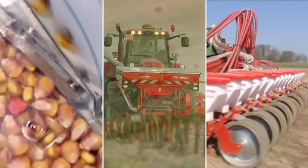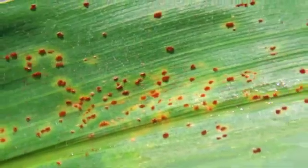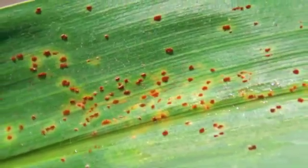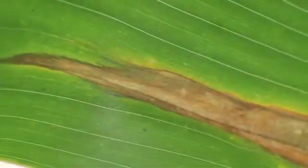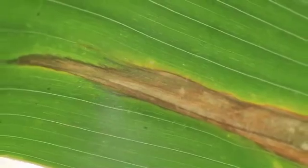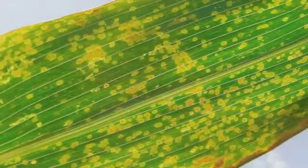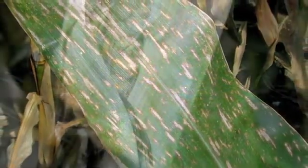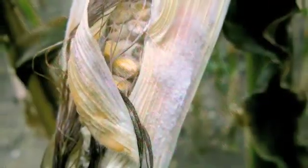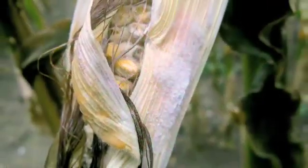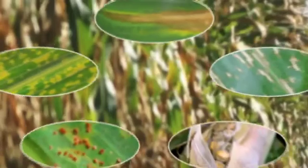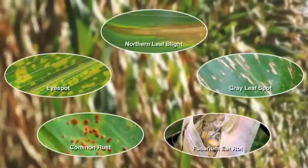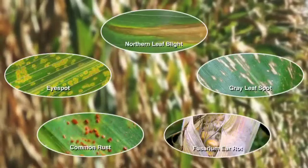These factors, among several others, expose corn to a higher risk of infection with diseases caused by numerous pathogenic fungi. Under certain climatic conditions, these pathogens can cause serious damage, limiting the yield and quality of corn harvests. This film focuses on five of these fungal diseases of corn.